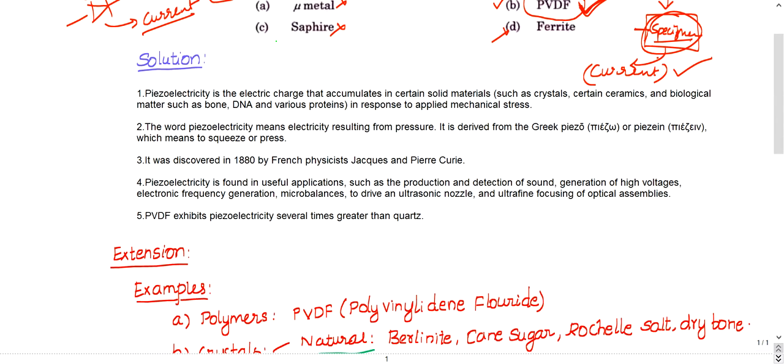Let us see some background. Piezoelectricity is the electric charge that accumulates in certain solid materials such as crystals, ceramics. It will be observed in crystals, ceramics, and some biological materials like bone, animal bones, DNAs, and various proteins in response to applied mechanical stress, which is nothing but pressure.